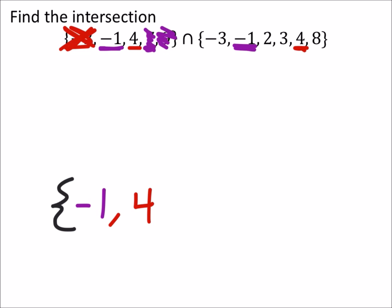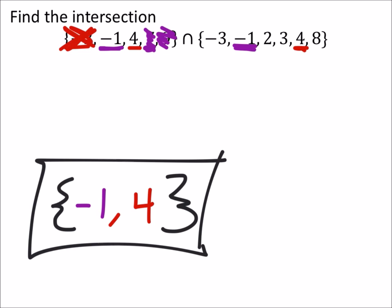Now, as it turns out, since we went through the first set, we don't really have to consider the other one. None of those existed in the other one except for these two numbers, negative 1 and 4. So this right here is our answer for the intersection.